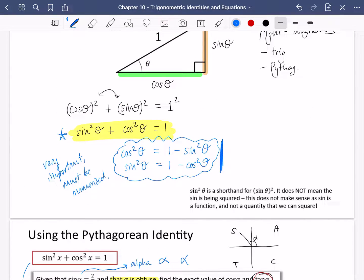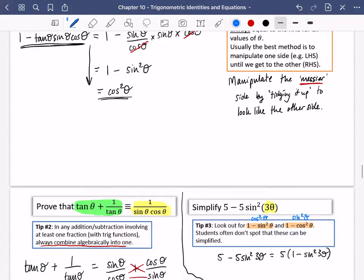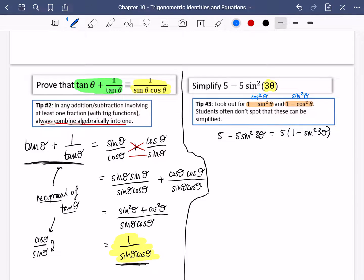If you're not sure where that comes from, that comes from over here. Now that I've got it look like this, I can see that 1 minus sine squared 3θ must be cos squared 3θ. Notice how it has to be 3θ and not just θ. It's still going to match. So it simplifies to 5 cos squared 3θ. That's that one simplified.